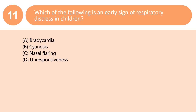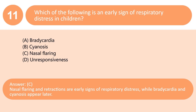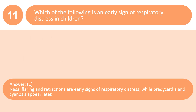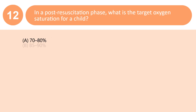Which of the following is an early sign of respiratory distress in children? A. Bradycardia. B. Cyanosis. C. Nasal flaring. D. Unresponsiveness. Answer: C. Nasal flaring and retractions are early signs of respiratory distress, while bradycardia and cyanosis appear later.